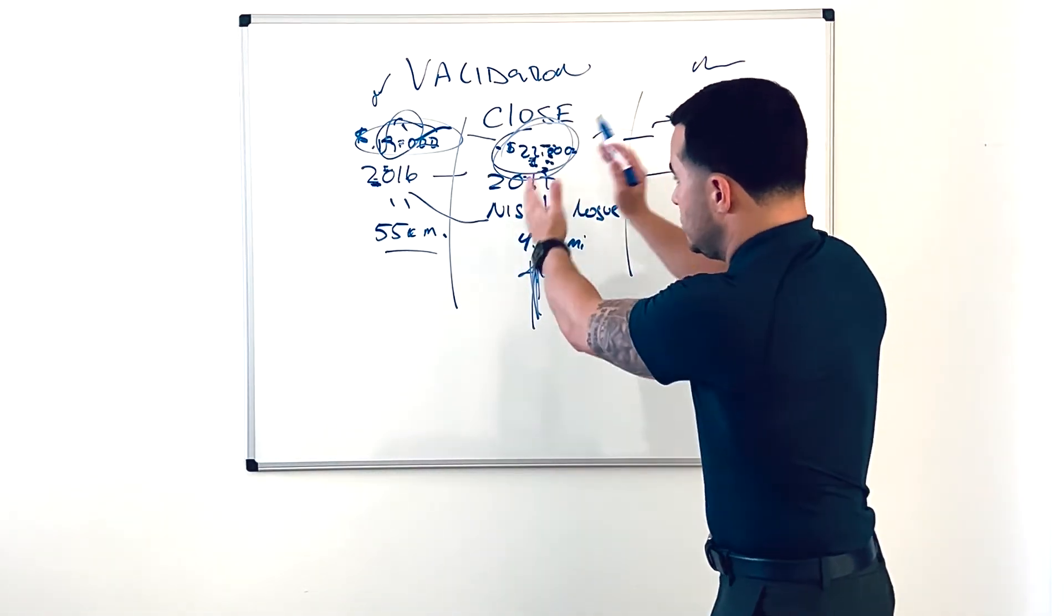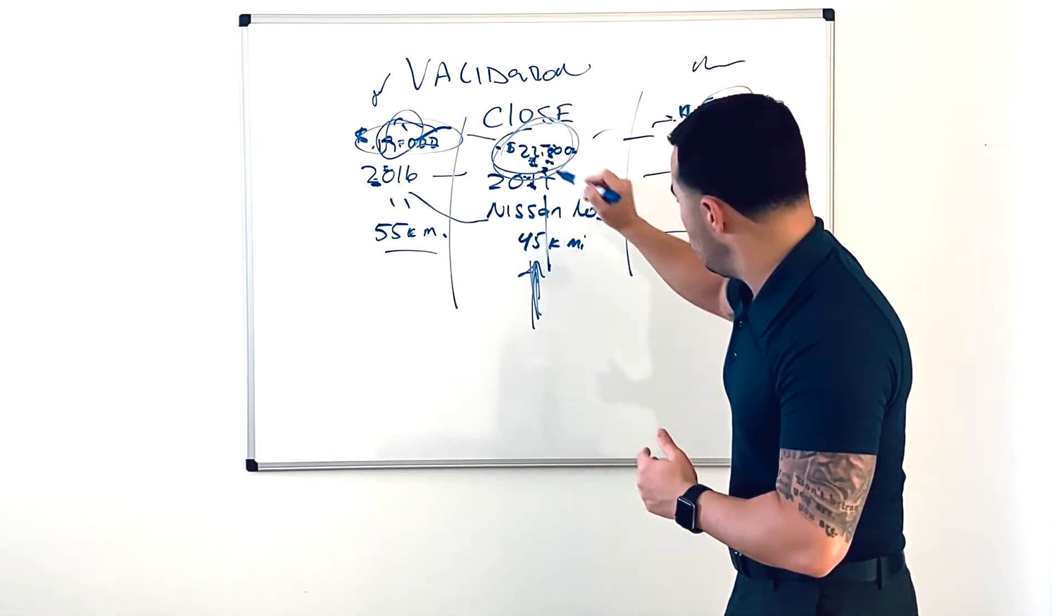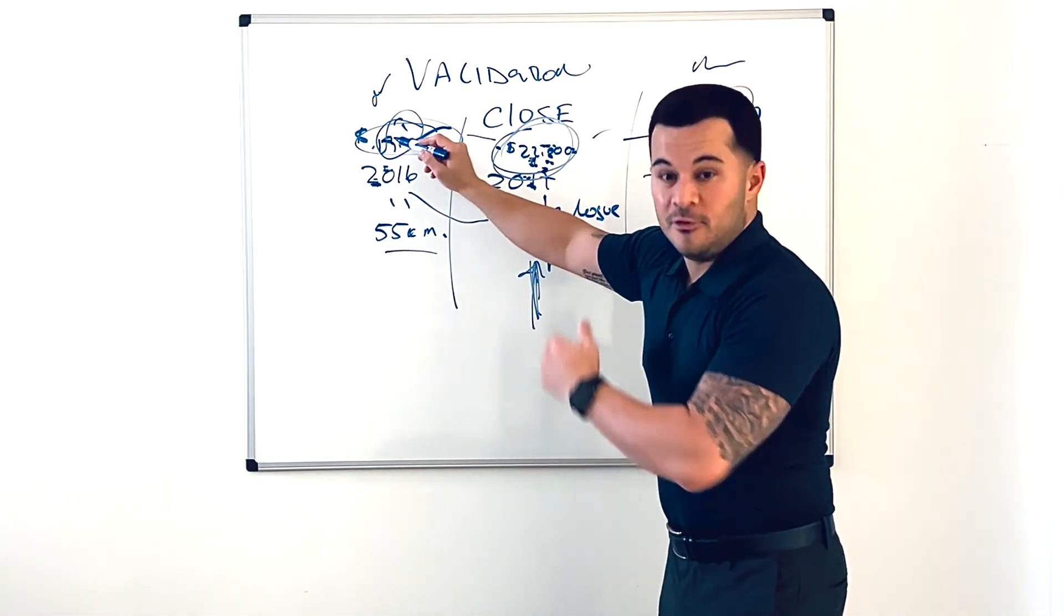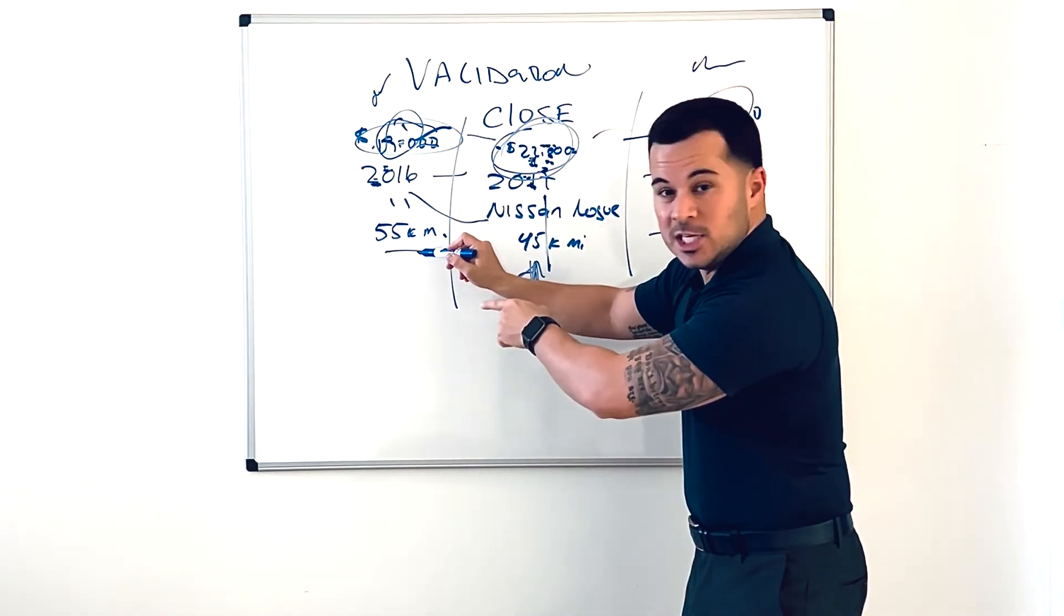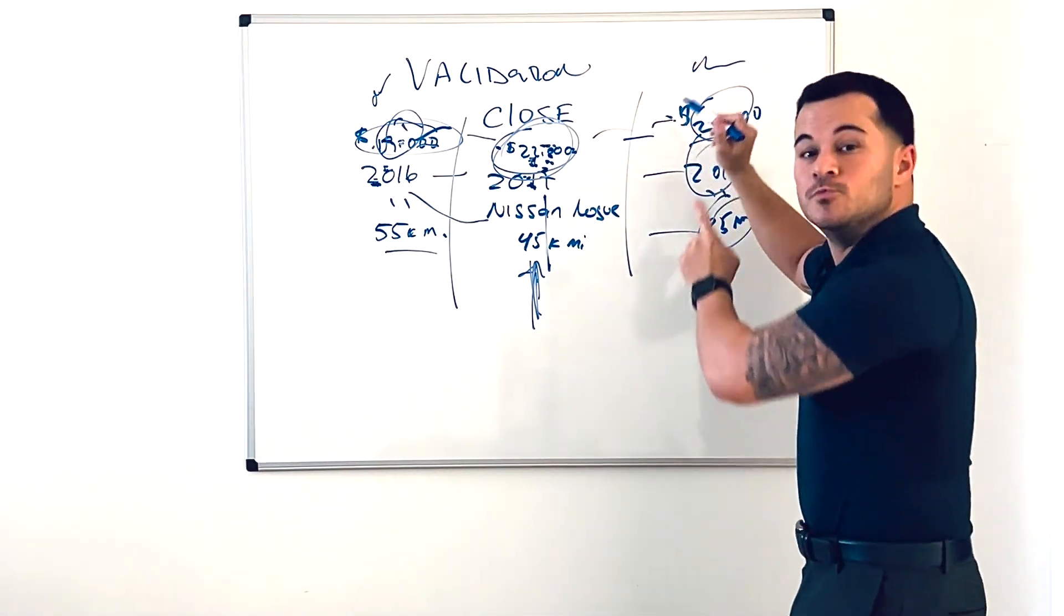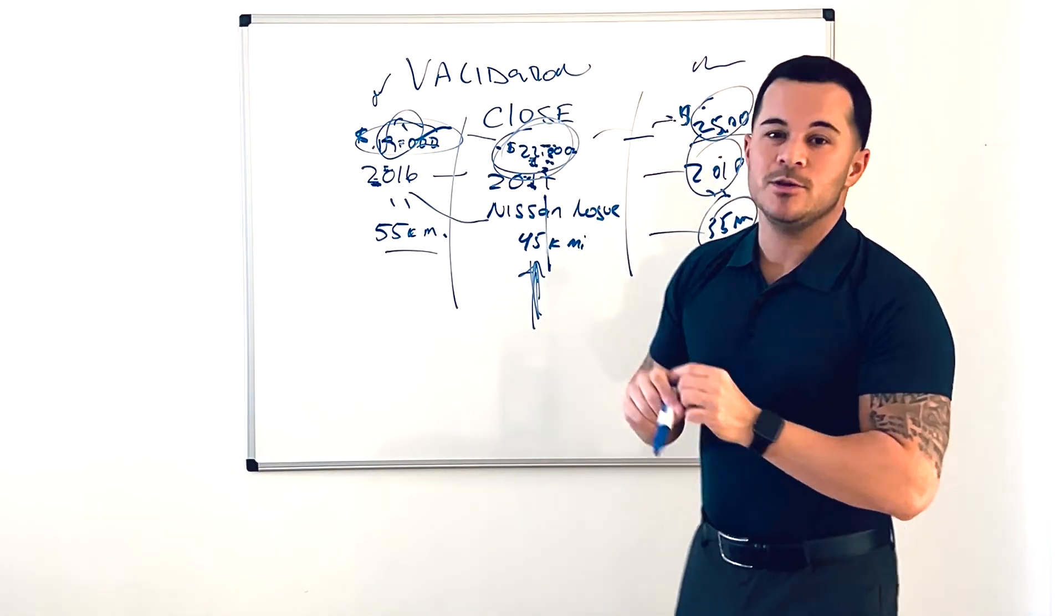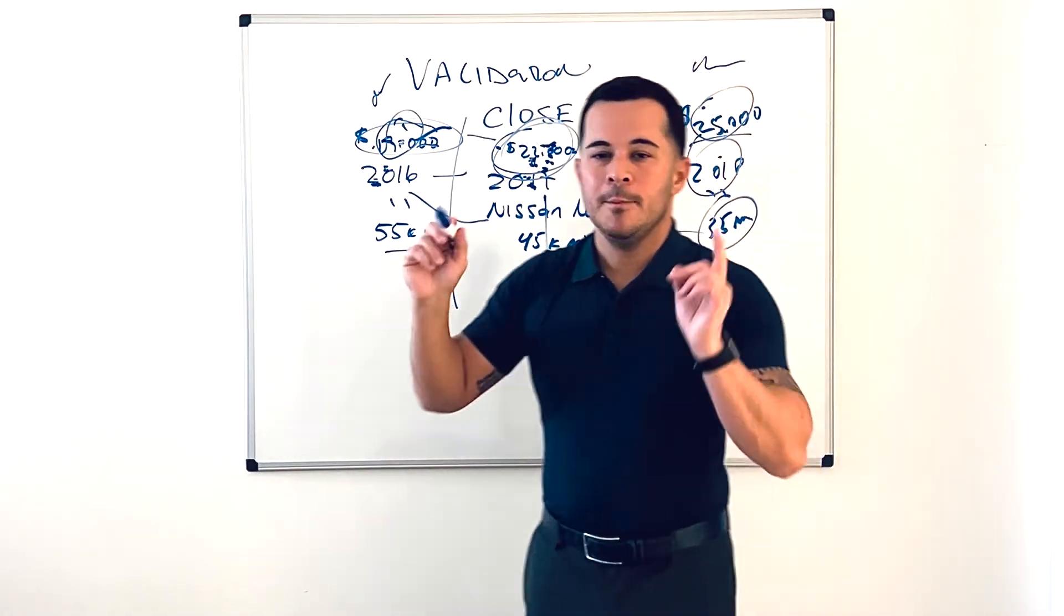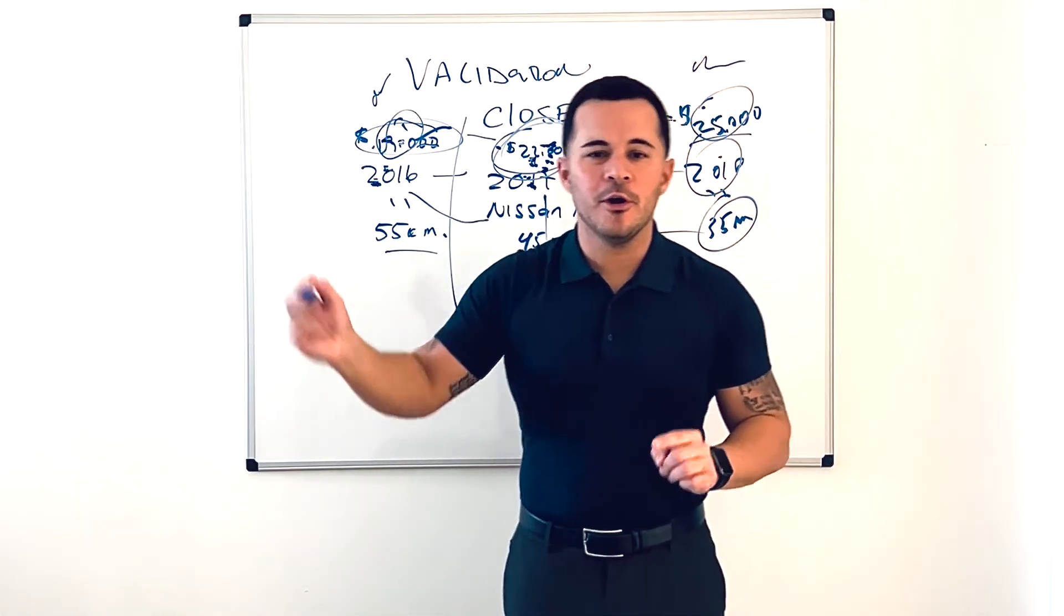So, '17, $22,000 price point, 45,000 miles. You go '16, $3,000 less, 10,000 more miles. '18, $3,000 more, 10,000 less miles. So that's the validation close. The goal is to validate the price of this vehicle by showing them a comparison of something older and something newer.